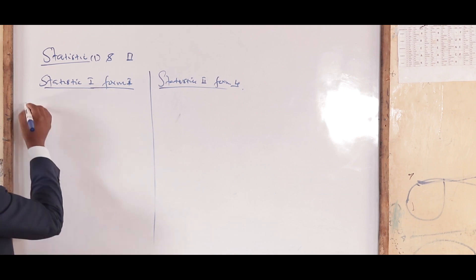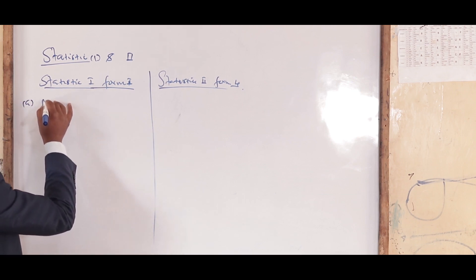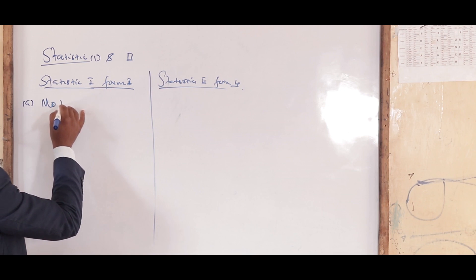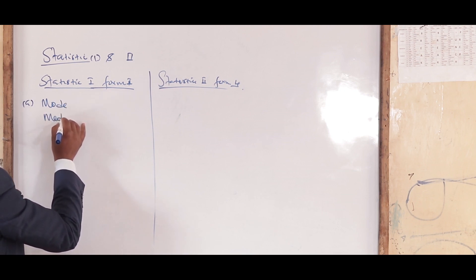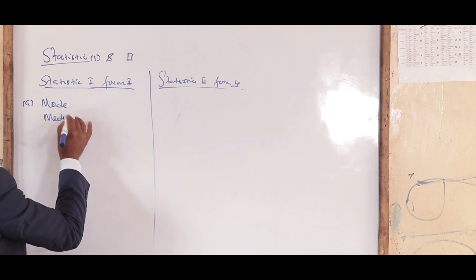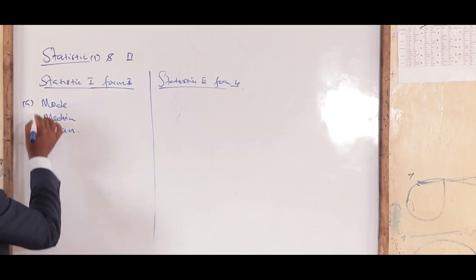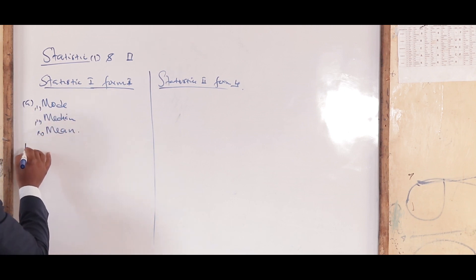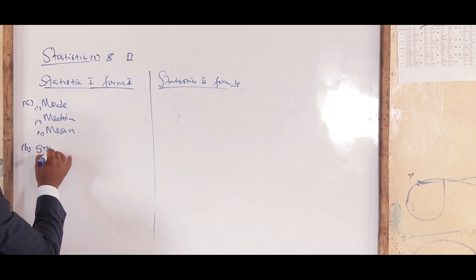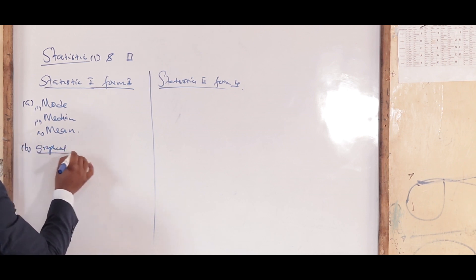Part A of Statistics 1 covers three things: mode, median, and mean. You have to understand all three of those concepts.